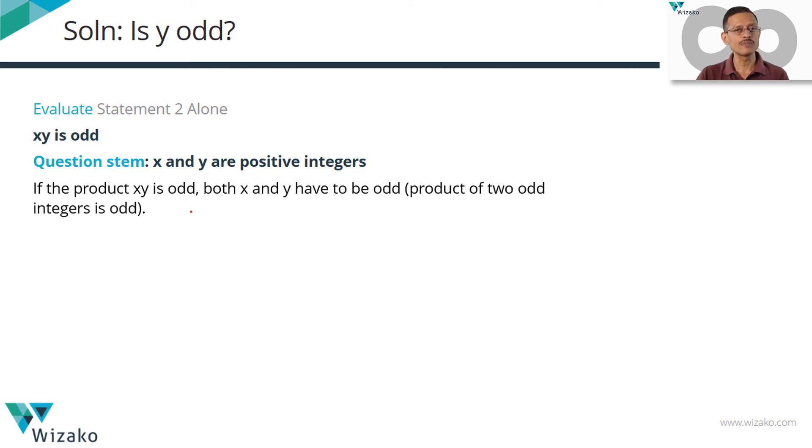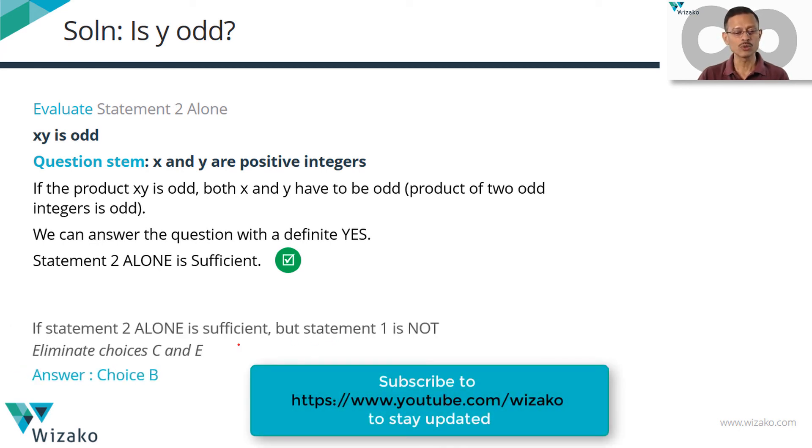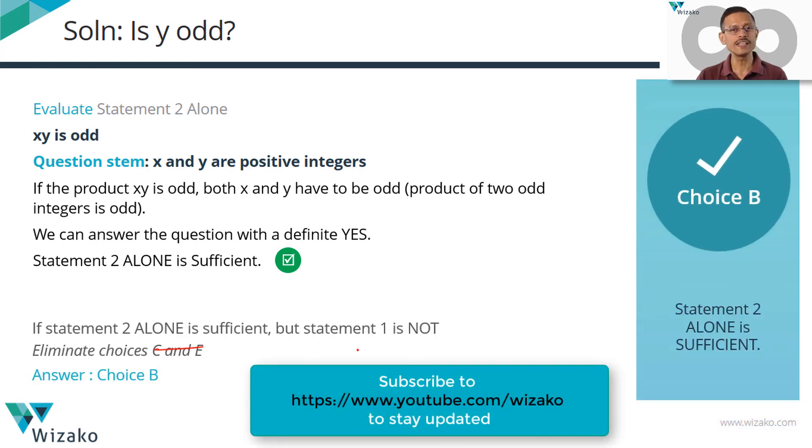Quickly recap the second statement alone in a printed form. We know that the product of two numbers will be odd only when both the numbers are odd if they are positive integers. Which essentially means that y is definitely odd. We are answering it with a definite yes. Statement 2 alone is sufficient. Can rule out choices C and E. Choice B is the correct answer.